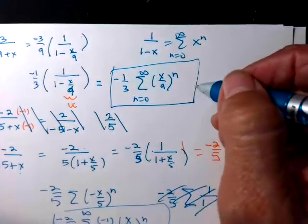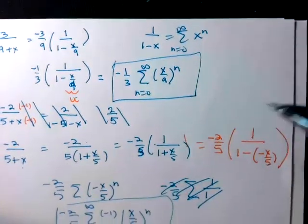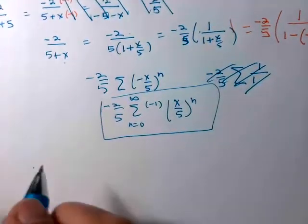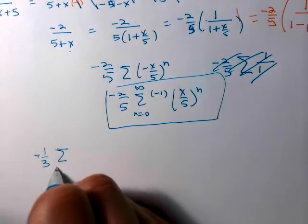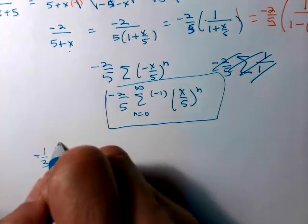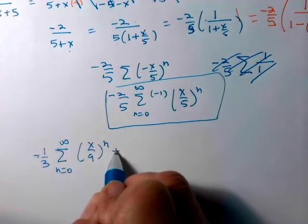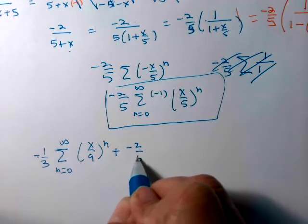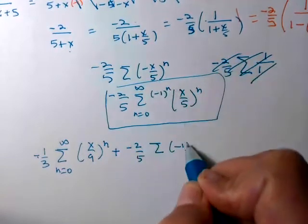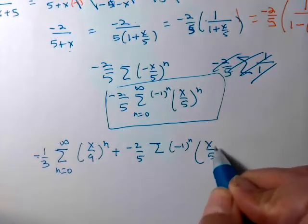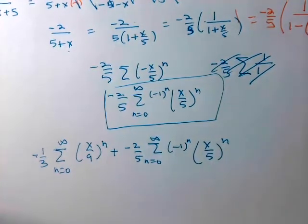And it was, I guess we were adding that up because I have my negative 2 already taken care of. So we're going to try to add these together. So I have negative 1 third, n equals 0 to infinity, x over 9 to the n, plus negative 2 fifths summation, negative 1 to the n times x over 5 to the n, from 0 to infinity.